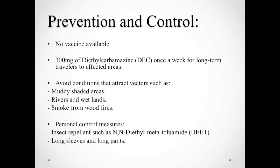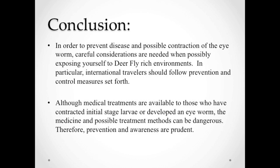Unfortunately, no vaccination is available for this disease. However, 30 milligrams of DEC can be taken once a week by long-term travelers to affected areas as a protection method. Because deer flies breed in muddy shaded areas along riverbanks and are attracted to smoke from wood fires, avoiding those areas and conditions may reduce one's risk of infection. Other personal control measures include wearing insect repellents such as DEET on exposed skin and wearing long sleeves and long pants during the day when deer flies bite.